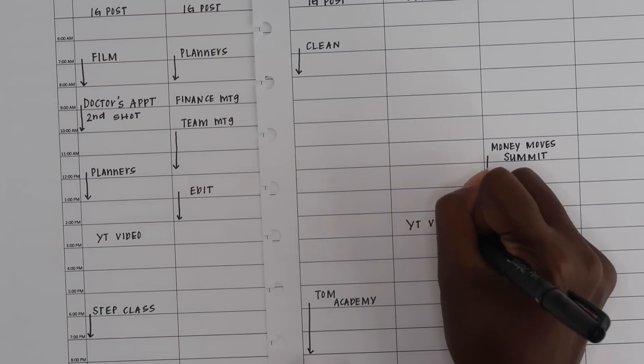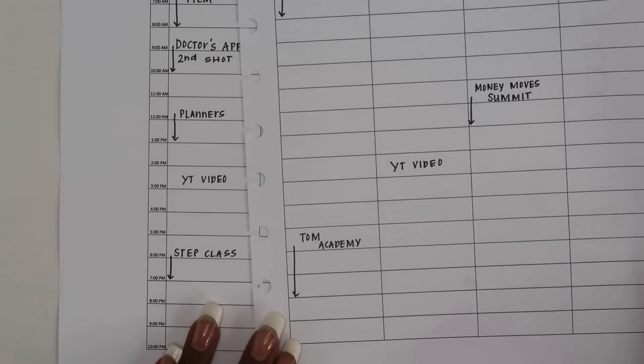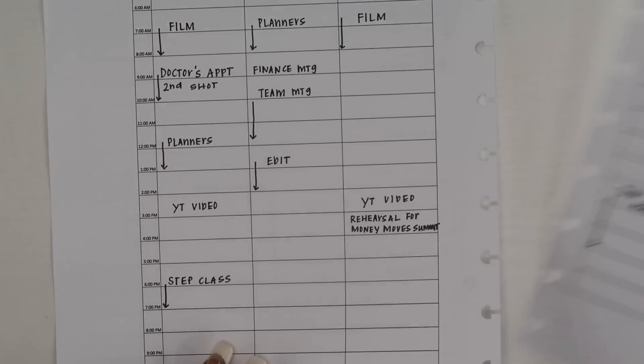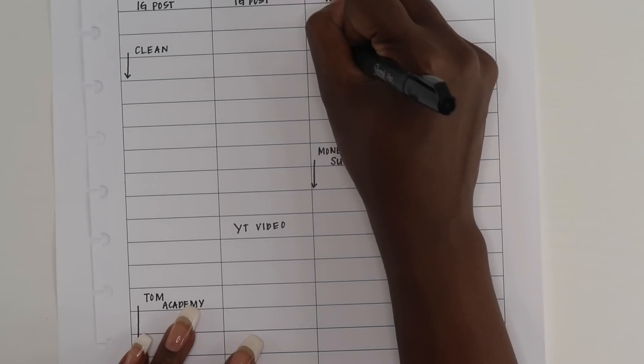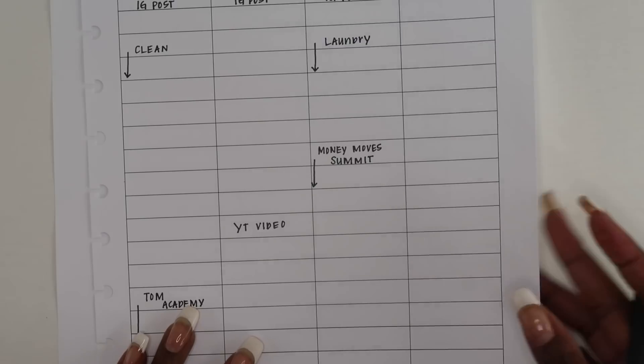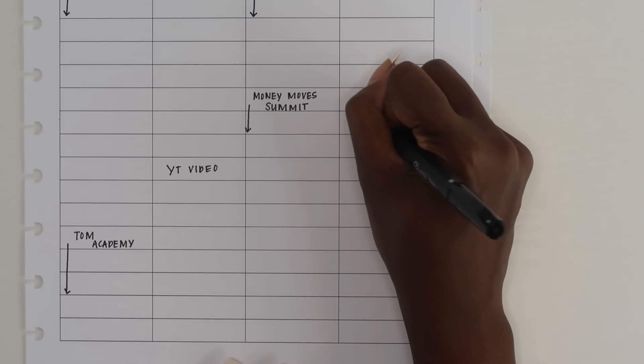What I started doing instead is drawing my arrows to the left or to the right of my plans. Mine are usually to the left, and that way I have way more space and I can still jot down other things during that same time.